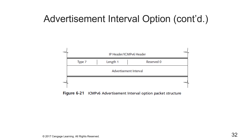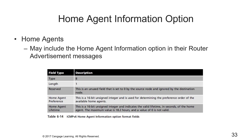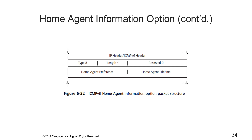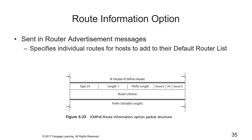The home agent information option can be included by home agents in their router advertisement messages, but it should not be included if the home agent bit — the H-bit — is not set. The information option format fields and packet structure are shown. Finally, the route information option is sent in router advertisement messages to specifically include routes for hosts to add to their default router list, as described in RFC 4191. The route information packet structure and option format fields are shown.